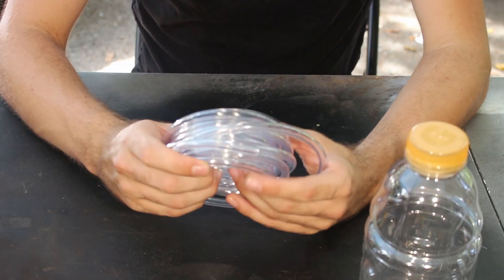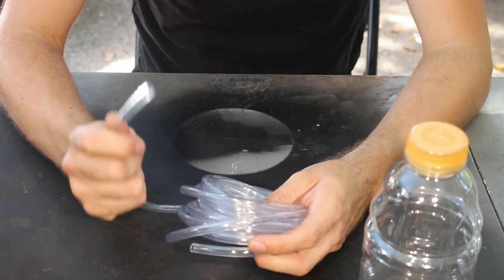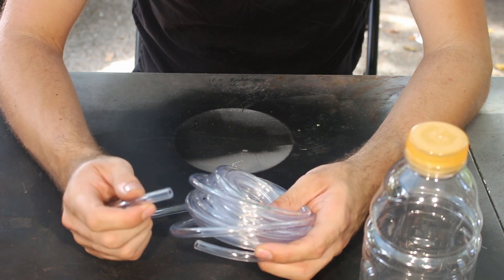You also need a hose. You need the right size hose to fit over the brake bleeder valve. This is 3/16ths inside diameter. It's a little bit tight, but you want tight so you get a good seal on the bleeder screw.